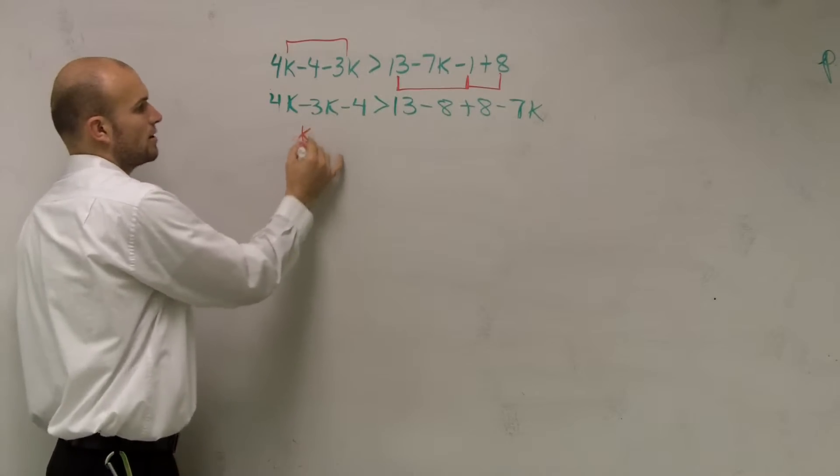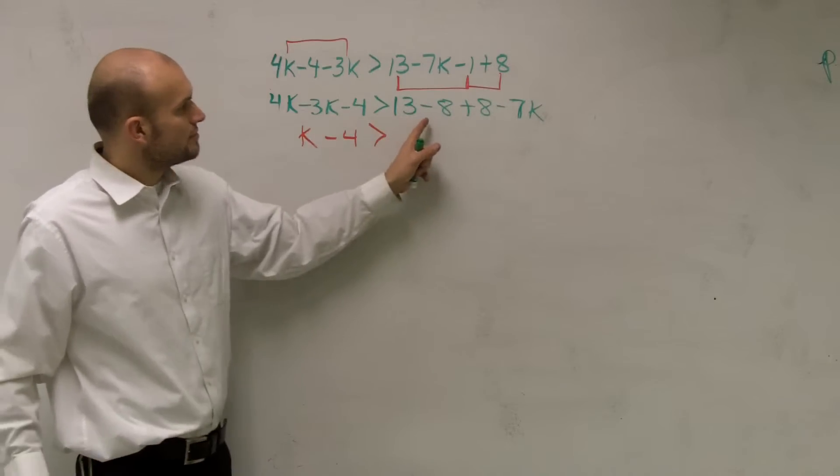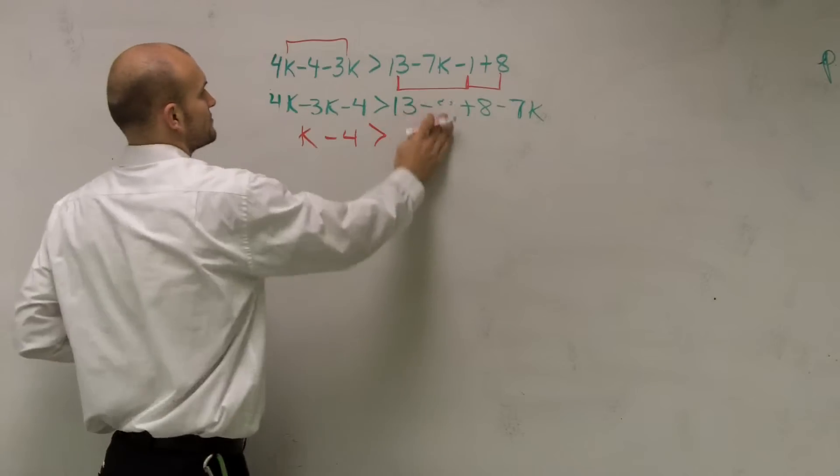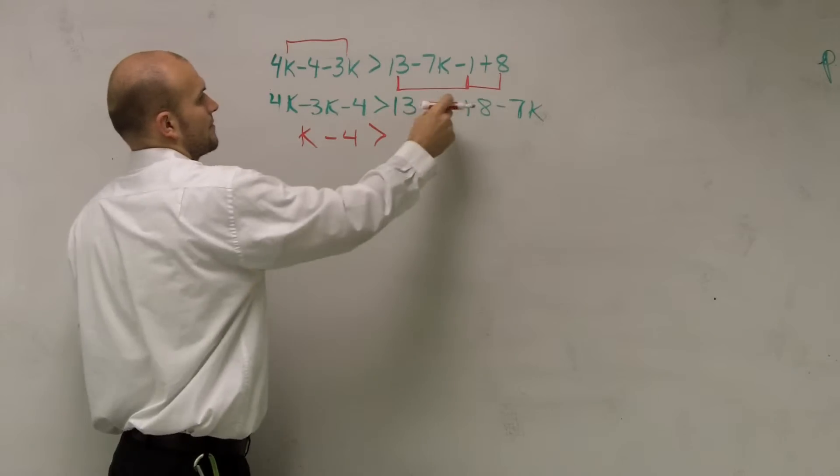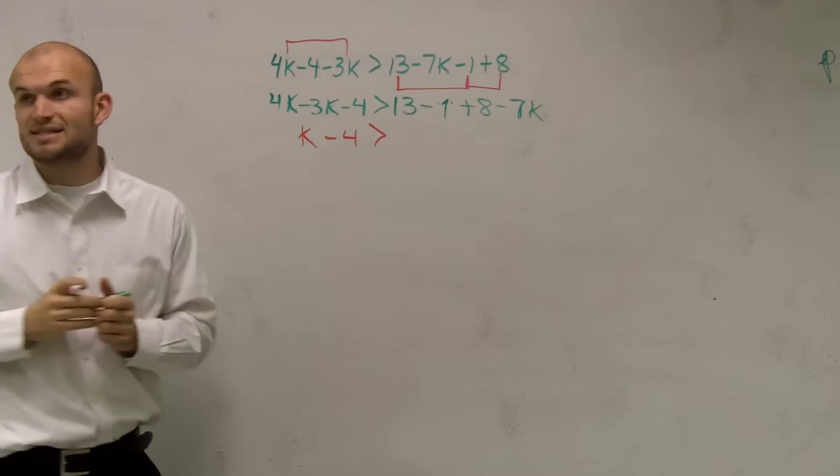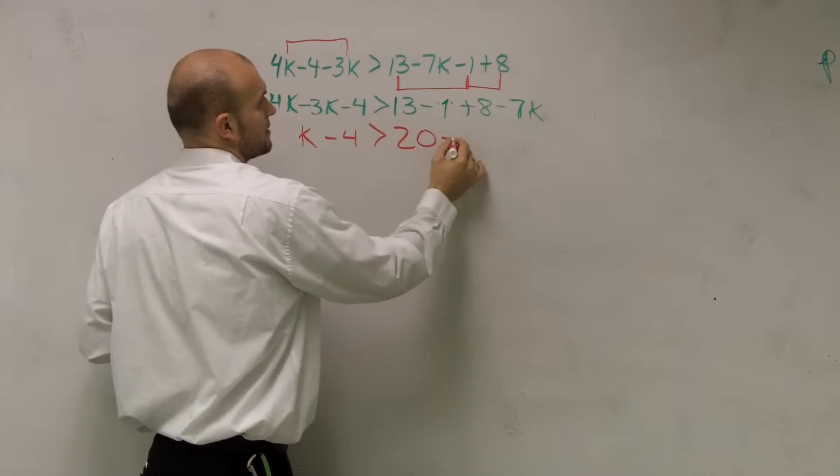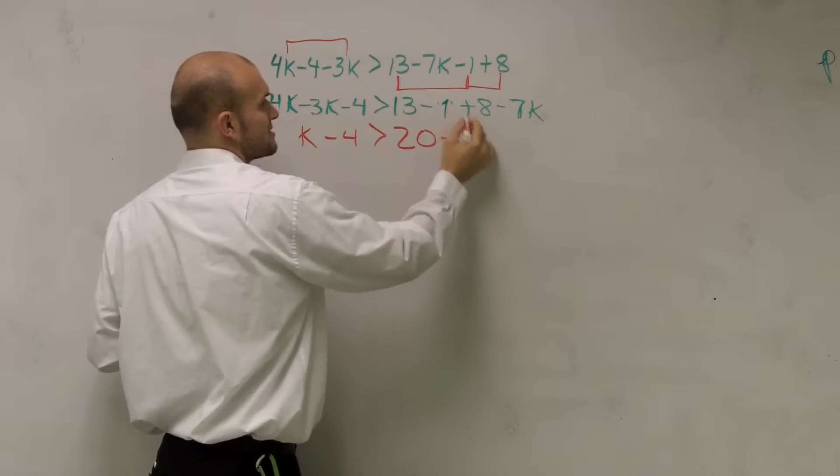4K minus 3K is just 1K minus 4, greater than, where's the 1? That's a 1. So, 13 minus 1 is 12, plus 8 is 20, minus 7K.